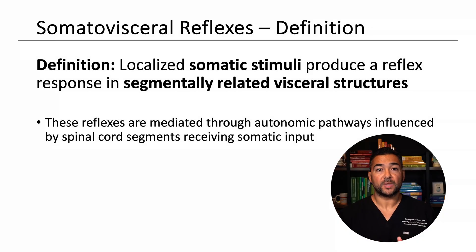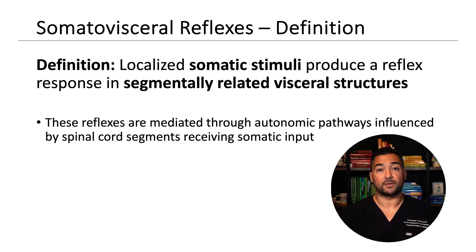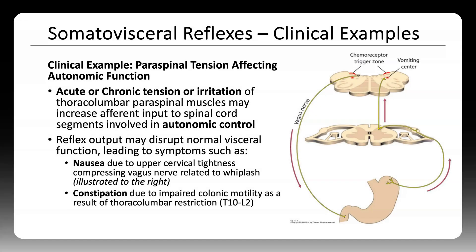Somatovisceral reflexes occur when a somatic input influences a visceral organ, often through autonomic efference. This explains how dysfunction in the spine or muscles can contribute to visceral symptoms. For example, tightness in the upper cervical spine after a whiplash injury can affect the vagus nerve, triggering nausea. Or chronic paraspinal tension in the thoracolumbar region can disrupt bowel motility. These are somatovisceral reflexes.